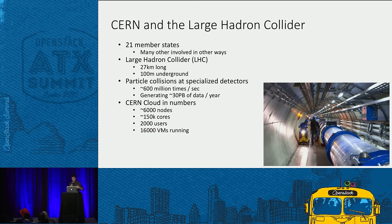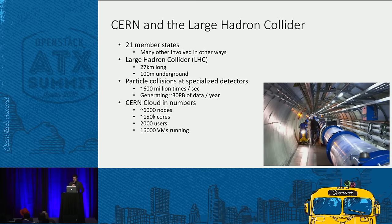CERN is built by 21 member states with many others involved in the collaboration. The main machine is the Large Hadron Collider — a particle accelerator 27 kilometers long and 100 meters underground, which we use to accelerate protons and generate collisions. These collisions happen in specialized detectors around 600 million times a second, generating around 30 petabytes of data for analysis. The CERN cloud runs on OpenStack with around 6,000 hypervisors, 150,000 cores, 2,000 active users, 16,000 VMs running at any moment, and about 200 VM creations and deletions per hour.